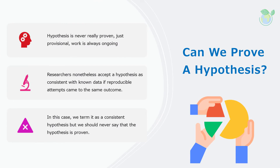Can we as researchers prove a hypothesis? A hypothesis is an explanation that we put forward for testing if it's valid. The reality is a hypothesis is never really proven — just provisional — as research work is always ongoing. Researchers nonetheless accept a hypothesis as consistent with known data if reproducible attempts came to the same outcome. In this case, we term it a consistent hypothesis, but we should never say the hypothesis is proven.